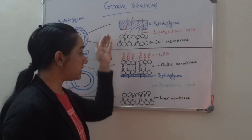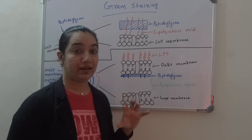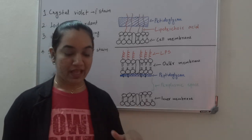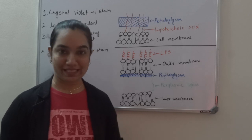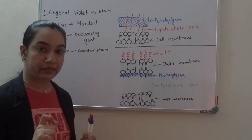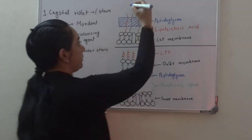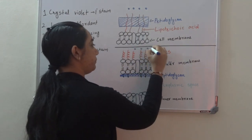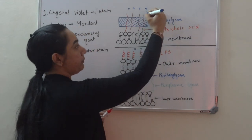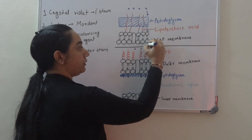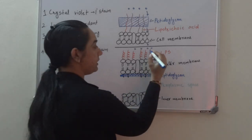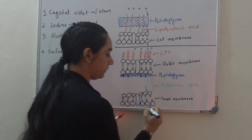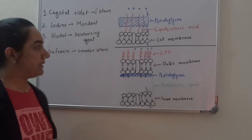Now we will see how this difference in cell wall causes the bacteria to stain differently. The first step is to take the bacterial sample, make a smear on the slide, and heat-fix the bacteria. Then we add the primary stain, crystal violet, which is blue in colour. Crystal violet molecules enter both gram positive and gram negative bacteria — passing through the peptidoglycan and cell membrane to go inside the cell. In gram negative, crystal violet crosses the outer membrane, peptidoglycan, then the inner membrane to enter the cell.